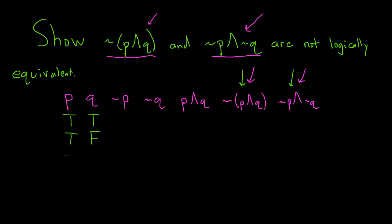Another case would be when p is false and q is true. And then the last case would be when they're both false.